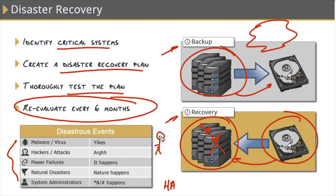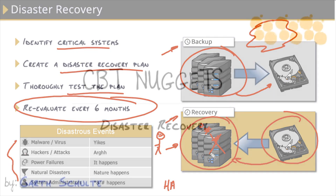All the while, our users have no idea what's going on in the background because it all happens automatically. The most they'll see is a little blip in the network while this switchover takes place. That's high availability — and that's some of the cool stuff you'll be playing with down the road if you stick with the systems administration field.